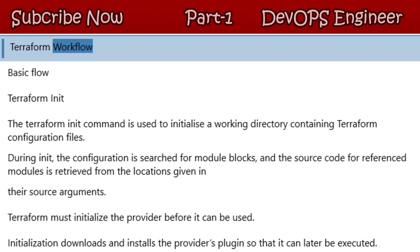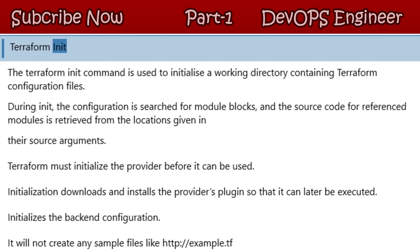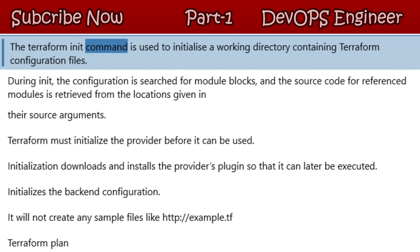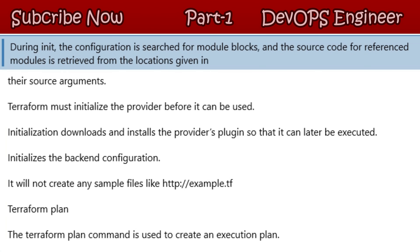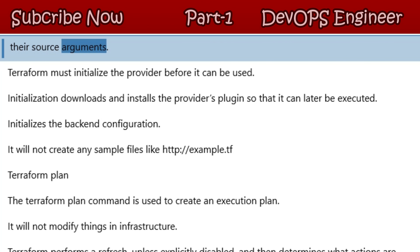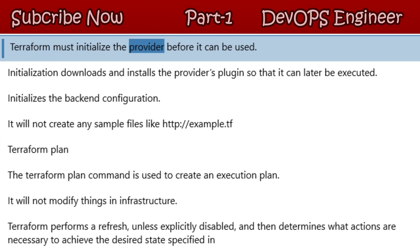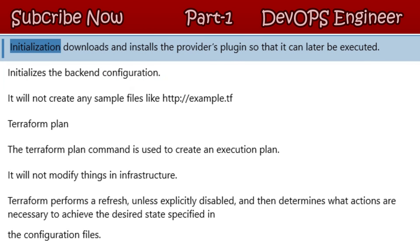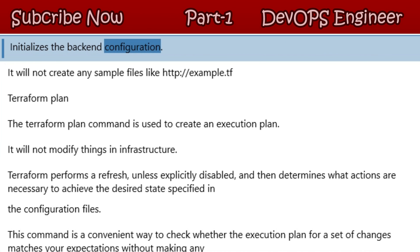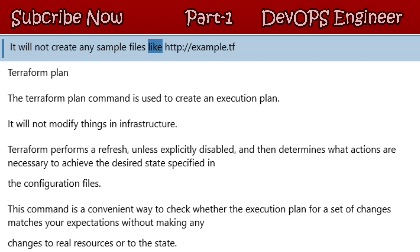Terraform Workflow — Basic Flow. The `terraform init` command is used to initialize a working directory containing Terraform configuration files. During init, the configuration is searched for module blocks, and the source code for referenced modules is retrieved from the locations given in their source arguments. Terraform must initialize the provider before it can be used. It initializes, downloads, and installs the provider's plugin so that it can later be executed. It also initializes the back-end configuration.